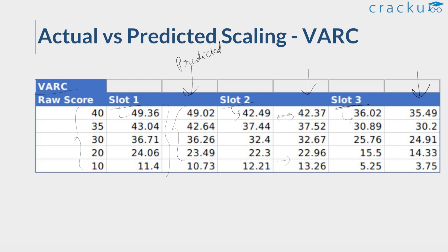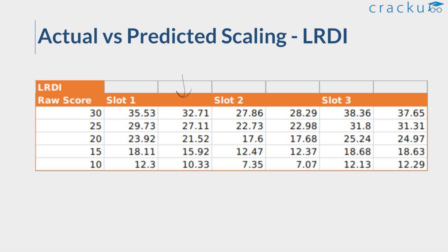Looking at LRDI: for Slot 1, the actual scaled scores were higher than our predictions. For a raw score of 30, the actual scaled score was 35.53 while our prediction was around 32-33. For Slot 2, the actual and predicted scores were pretty close. Similarly in Slot 3, predictions were close to the actual numbers, but in Slot 1 the scaling was a bit higher than we predicted.